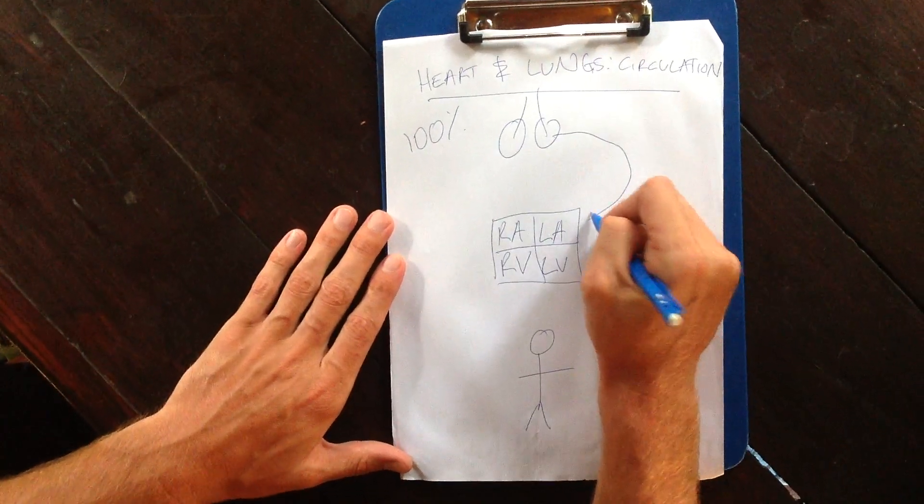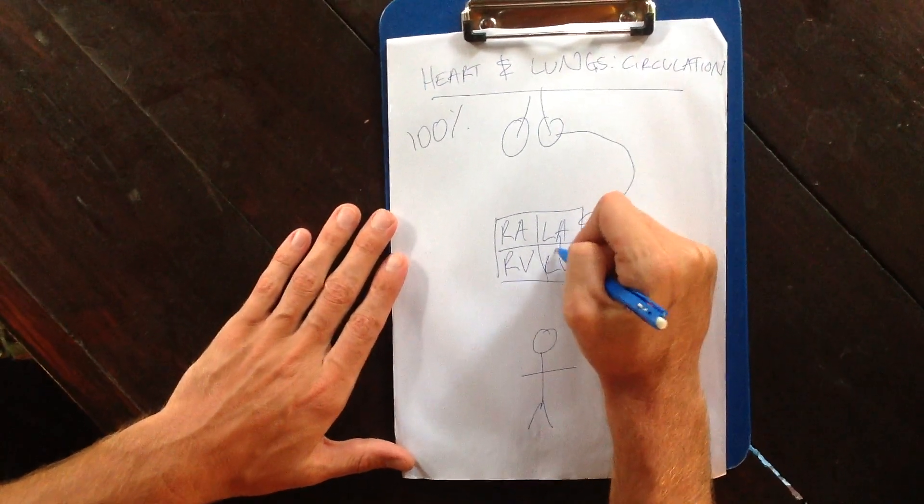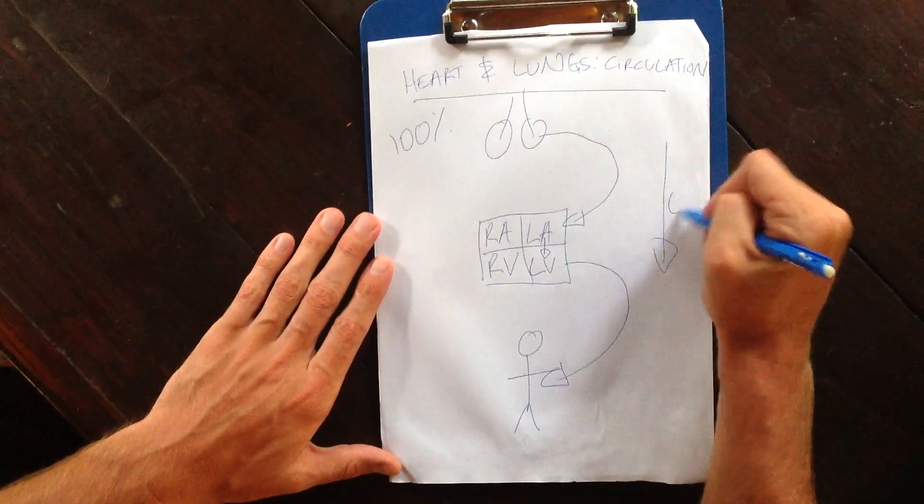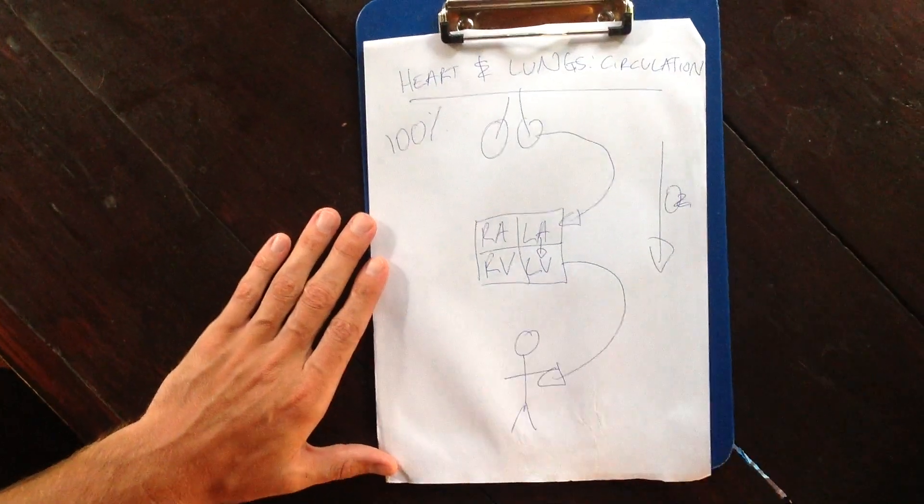and from there, oxygenated blood into the left atrium. It drops into the left ventricle, and it's pumped through to the body. So this side is all about oxygen. There's an O2 there.